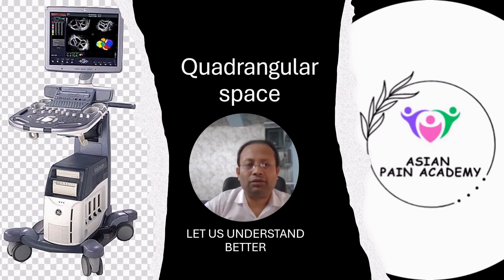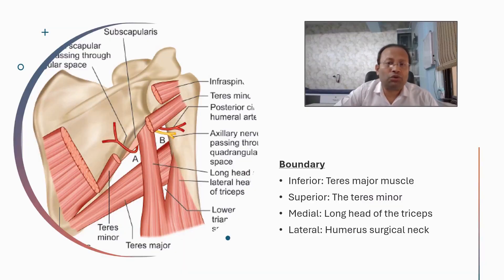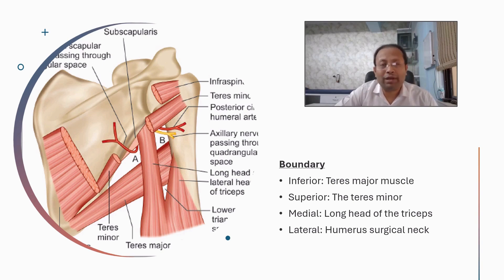Quadrangular space — why is it important for a pain physician, and how to locate it under ultrasound? A pain physician looks for the quadrangular space mainly on two occasions: one is entrapment neuropathy of the axillary nerve, and the second is when denervation of the shoulder joint is planned.